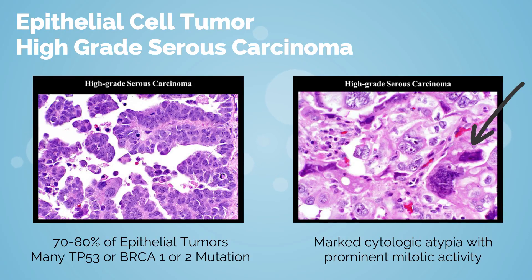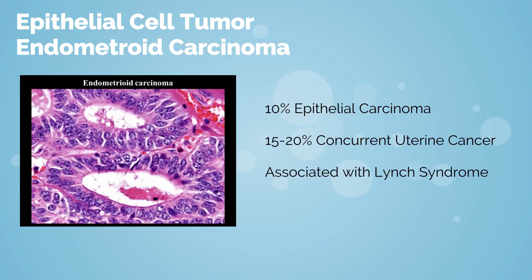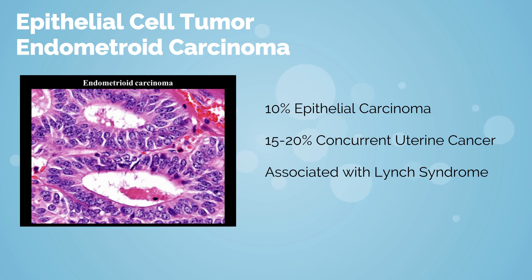High-grade serous carcinoma accounts for 70–80% of epithelial carcinomas. The key pathologic feature is marked cytologic atypia with prominent mitotic activity. Many patients have TP53 or BRCA1/2 mutations. Endometrioid carcinoma accounts for about 10% of epithelial carcinomas. These tumors usually present in women between 40 and 50 years old. It is often diagnosed at an earlier stage and is chemosensitive — meaning susceptibility of tumor cells to the cell-killing effects of anti-cancer drugs.